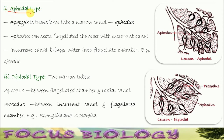In the aphodal type, you can see in this diagram: this one is the flagellated chamber, and this one is the radial canal or excurrent canal, and this one is a small canal-like structure. Actually, it is the apopyle. Here, the apopyle transforms into a narrow canal called aphodus, and this aphodus opens into the excurrent canal which leads outside through osculum. It is found in Geodia.